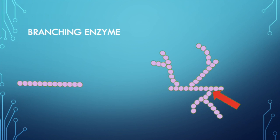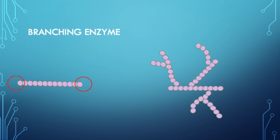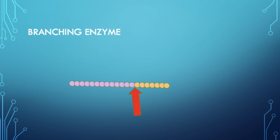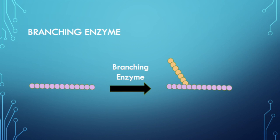The alpha-1,6 glycosidic linkages are created by the branching enzyme. Branching of the glycogen chain is essential because it increases the rate of glycogen synthesis and breakdown by increasing the amount of terminal glucose residues. On a straight glycogen chain there are only two terminal ends; if branching occurs, it adds multiple sites for glycogen synthesis. The branching enzyme breaks alpha-1,4 glycosidic bonds, detaching about seven or more glucose molecules including a terminal non-reducing end, which are then reattached to a different location via alpha-1,6 glycosidic bonds, creating a new branch.